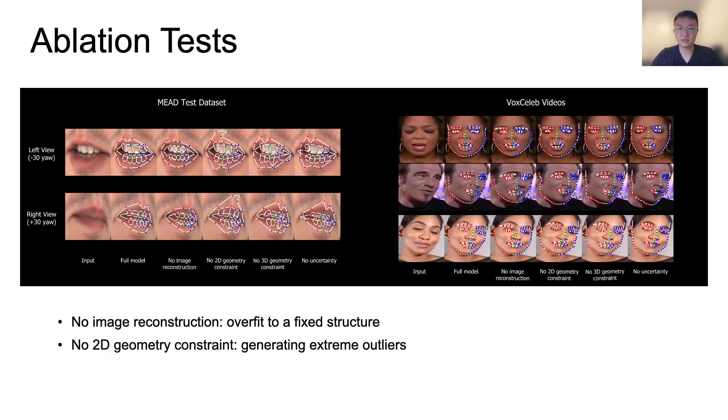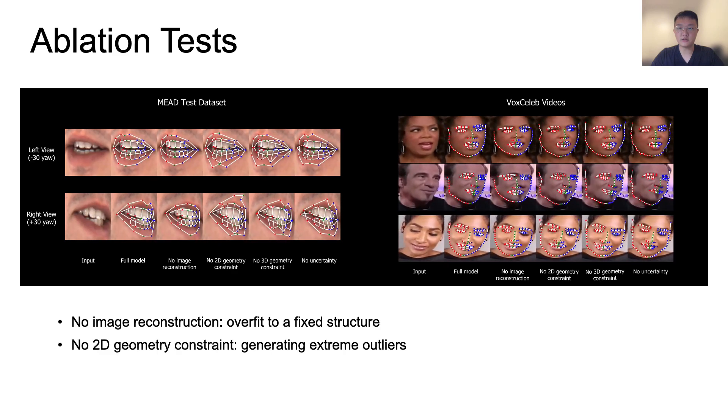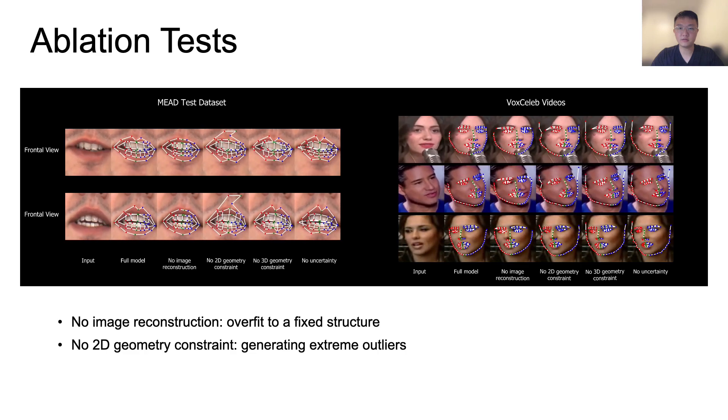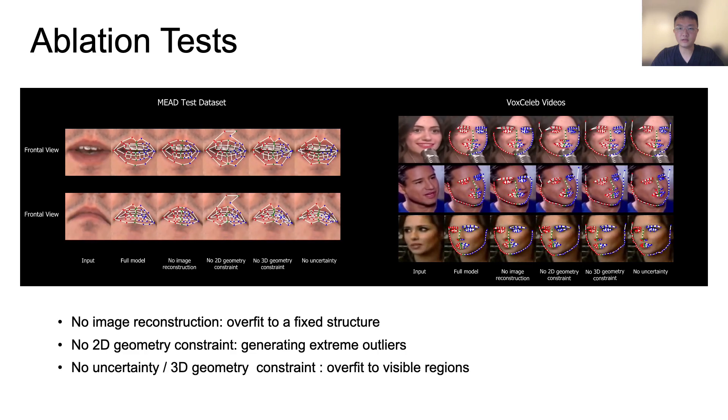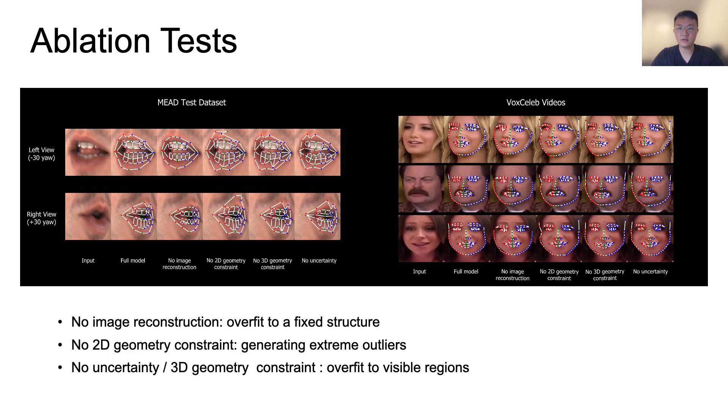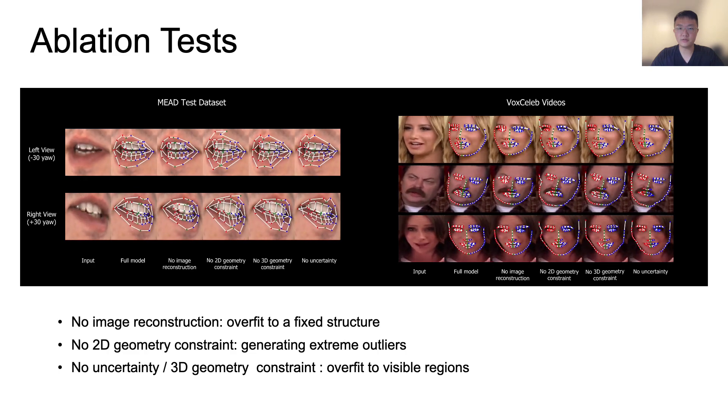Without 2D geometry constraints, the model might generate extreme outliers. Without uncertainty or 3D geometry constraints, the model overfits to visible regions.